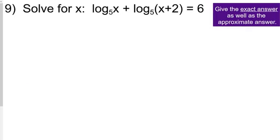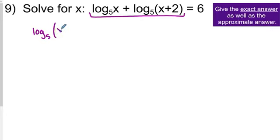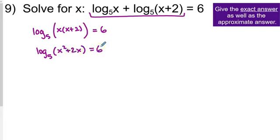The next two problems are slightly more complicated logarithmic equations. This logarithmic equation has two logarithms in it, but from previous lessons you know there's a way to combine logarithms into one. We're going to use log properties to combine these into a single logarithm. Because we have a log plus a log, we use the product property to combine them into the log of a product: log base 5 of x times x plus 2 equals 6. Simplifying: log base 5 of x squared plus 2x equals 6.